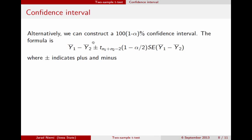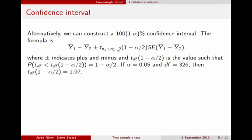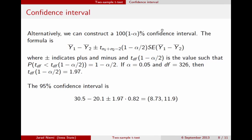The plus or minus symbol means plus and minus. The t subscript df is the critical value such that the stated probability holds, and you look this up in a table or using statistical software. If alpha is 0.05 and the degrees of freedom are 326 — that's n1 plus n2 minus 2 — then the t critical value is 1.97. Plugging the rest of the numbers in, we find the confidence interval is 8.73 to 11.9.